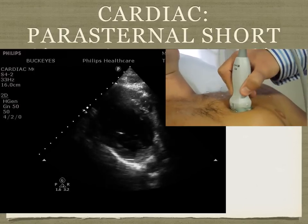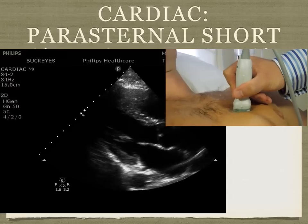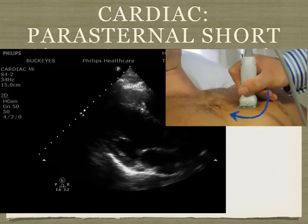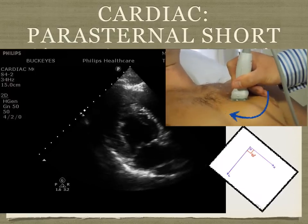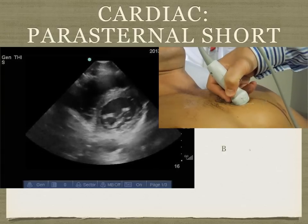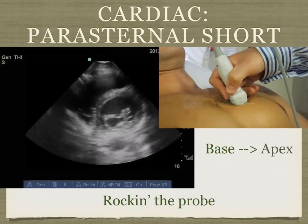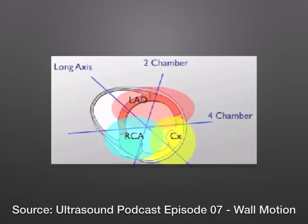Now we're transitioning over to the parasternal short. As long as you have your parasternal long in the correct view, transitioning to the parasternal short is very easy — you just rotate the probe 90 degrees clockwise. After you get the parasternal short, you want to be able to rock through the entire length of the heart, going from the base to the apex and making sure you catch all portions of the heart. That's what we're looking at for parasternal short.